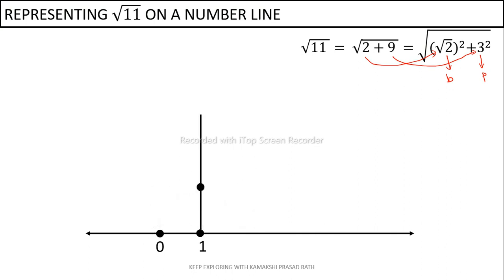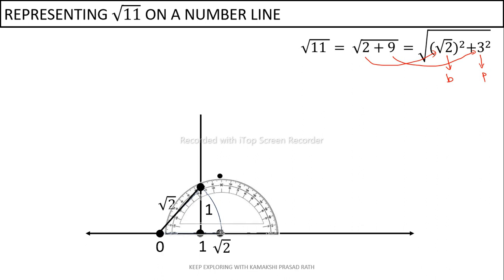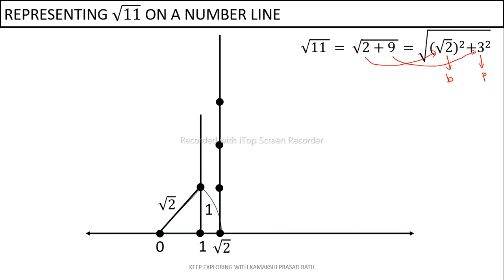We already know how to construct root 2 — taking one unit as the base and one unit as the perpendicular gives hypotenuse as root 2. This is plotted on the number line, making root 2 our new base. Now we construct a perpendicular of 3 units on it: measuring one unit at a time, we mark 1, 2, and 3 units. With root 2 as base and 3 as perpendicular, we get root 11 as the hypotenuse, which is then plotted on the number line.